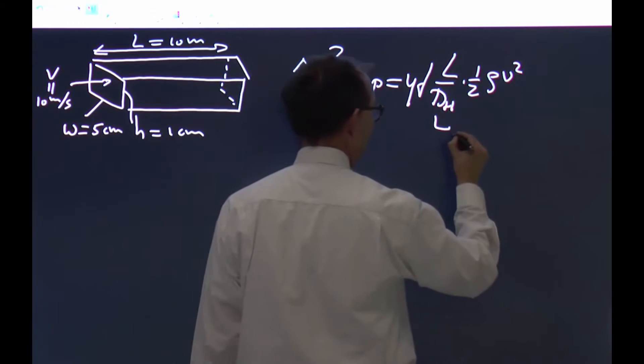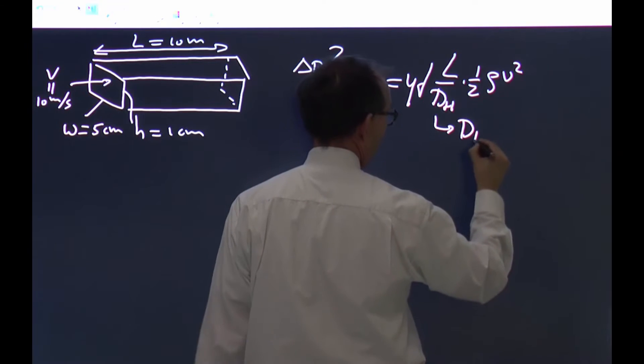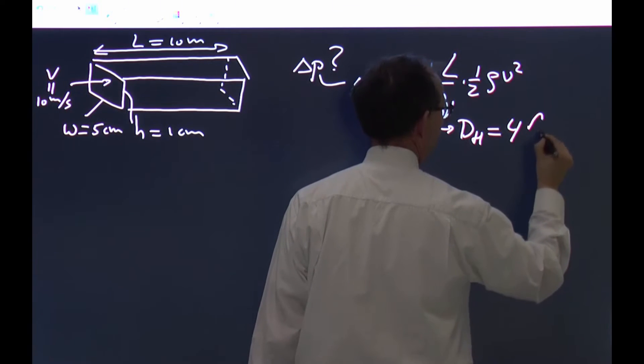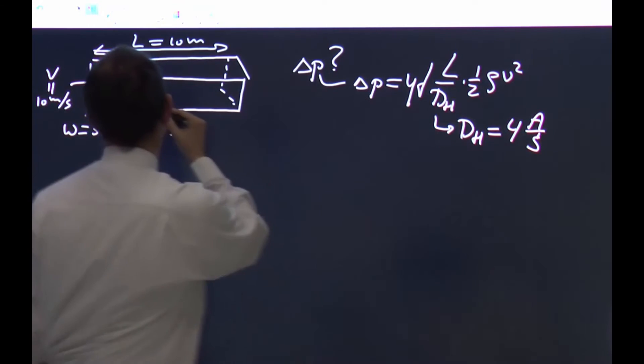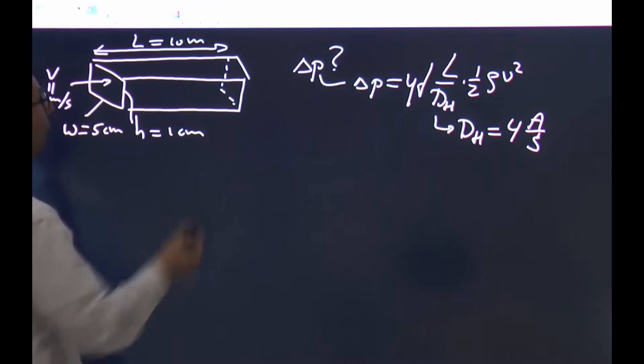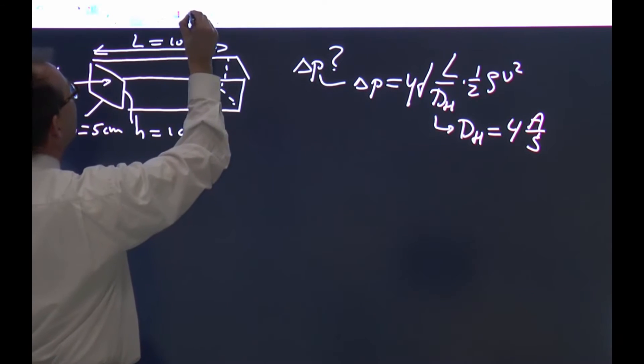Because it's not a cylindrical tube, we need to use that the hydraulic diameter is four times the area through which the water is flowing. I could mark that in yellow.